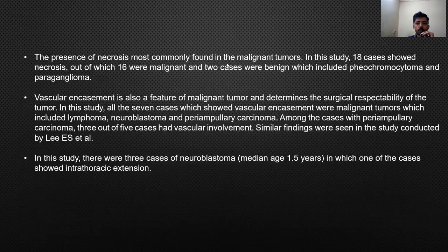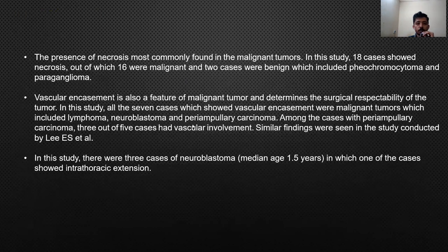The presence of necrosis is most commonly found in malignant tumours. My study includes 18 cases that showed necrosis, out of which 16 cases were malignant and two cases were benign, which included pheochromocytoma and paraganglioma. Vascular encasement is also a feature of malignant tumours. In my study, all seven cases showing vascular encasement were malignant, which included lymphoma, neuroblastoma, and peri-ampullary carcinoma. Among the cases with peri-ampullary carcinoma, three out of five cases had vascular involvement.